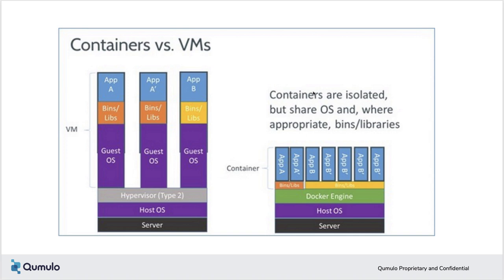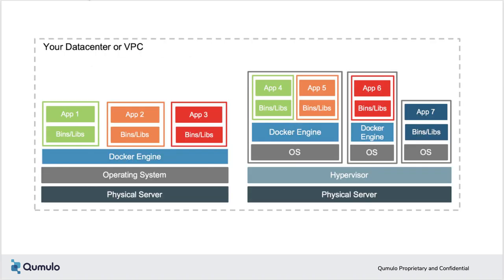Docker enables developers to easily pack, ship, and run any application as a lightweight, portable, self-contained container which can run virtually anywhere — it is the ultimate instant application portability. With our Elasticsearch with Cumulo audit logging application, I was able to create a group of containers that included all the dependencies to run Elasticsearch, FileBeats, Logstash, and Kibana without spending hours loading virtual machines. And yes, Docker can coexist on VMs — VMs are a great place for Docker hosts to run, whether it's VMware, Hyper-V, Xen, or KVM.